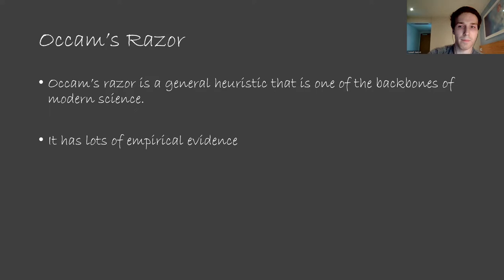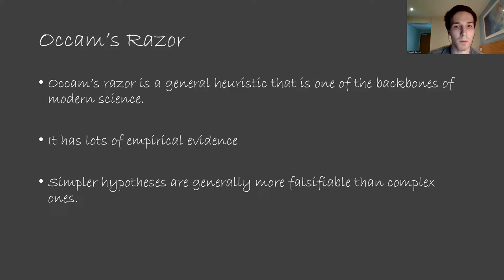One of the insights here is that scientists like hypotheses that are more falsifiable, and simpler hypotheses are generally more falsifiable than complex ones. If we consider the linear hypothesis 2n-1, that had only two parameters. It was falsifiable after just two data points. All linear hypotheses were falsifiable after just two data points.